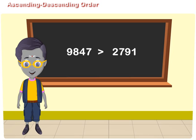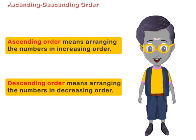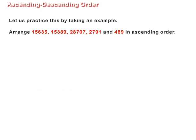Ascending order means arranging numbers in increasing order. Descending order means arranging numbers in decreasing order. Let us practice this by taking an example: arrange 15,635, 15,389, 28,707,